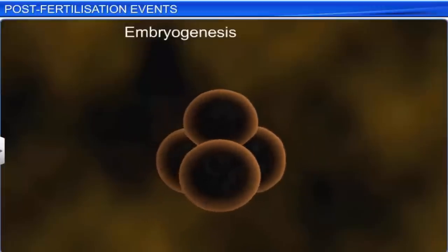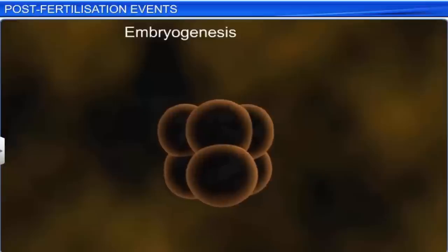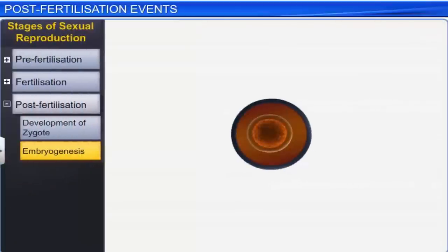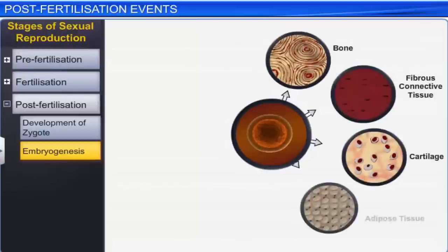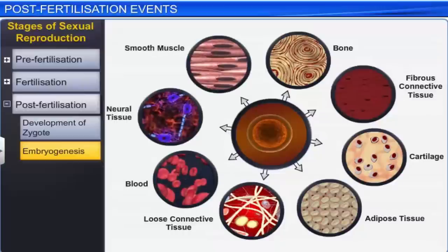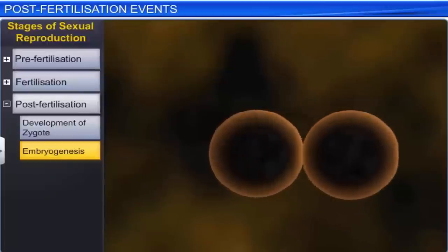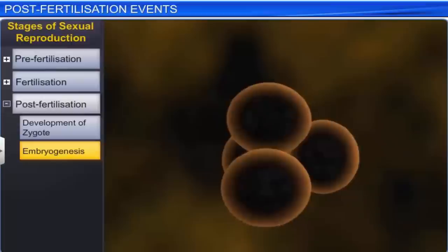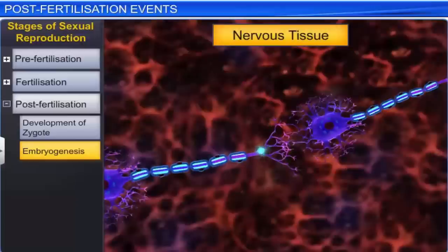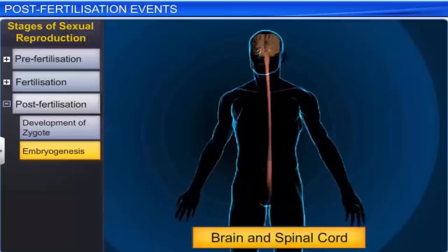After the initial development, the zygote slowly starts metamorphosing into an embryo through a process known as embryogenesis. During this process, the zygote starts to divide mitotically, resulting in an increase in the number of cells. Simultaneously, the zygote also undergoes cell differentiation, a process during which groups of cells go through modification to form different tissues and organs. For example, the cells of an embryo differentiate to form nervous tissue, which later develops into organs such as the brain or spinal cord.